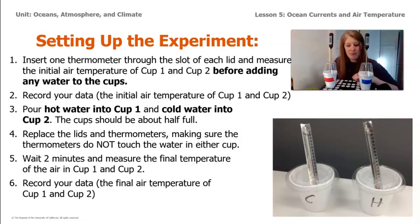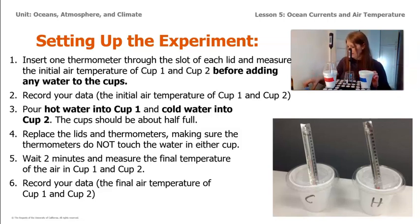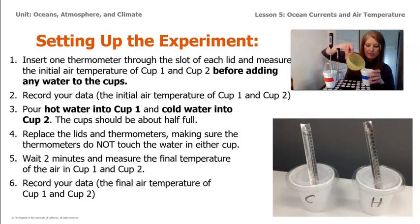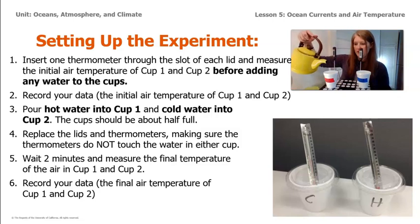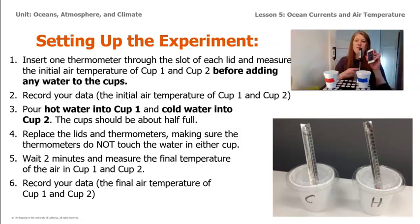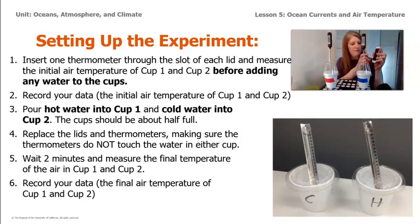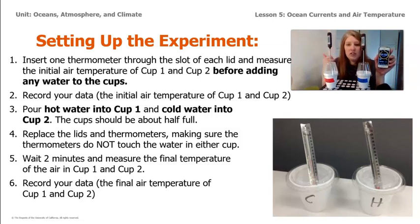Now that we've recorded the initial temperature, let's go ahead and add the water. In the cold cup, I have some cold water in a little bowl with a spout so it's easy to pour, and we're going to fill this about halfway. Then I have my hot water — make sure we don't mix up our thermometers — and the hot water in my little tea kettle. We're going to pour it to the same height. I've got my timer ready, I'm going to place the lids on, and hit start. We'll come back after two minutes to see what the temperature change in the air might be.